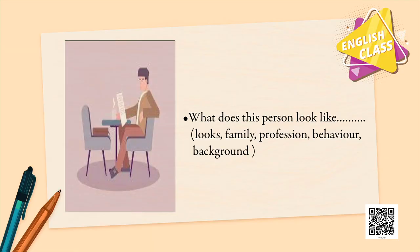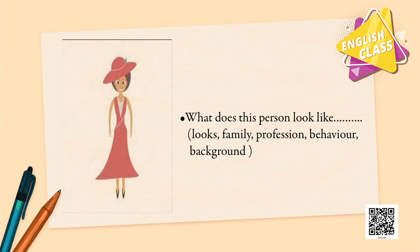Look at the second picture. What is he doing? What kind of person is he? What could be his family background? What could be his profession? He looks like a gentleman — he is reading, he is dressed well, he is from a good family. Now look at the third picture. How is this female looking? A beautiful, elegant lady from a good family. She could be working or not — anything.